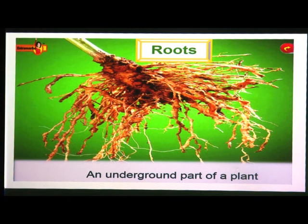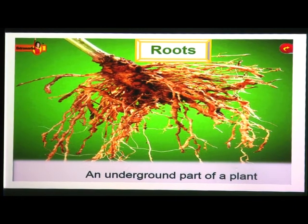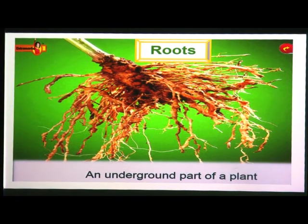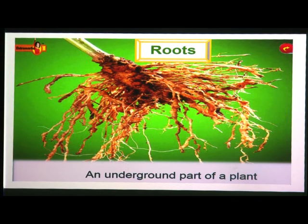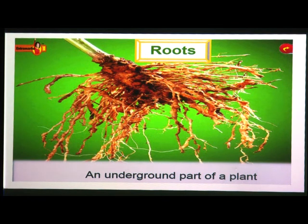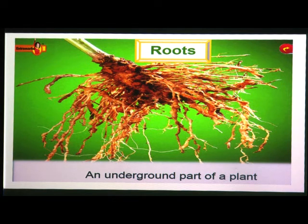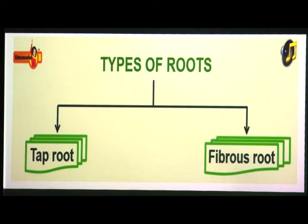The root and its branches make up the root system of a plant. Root is the underground, non-green part of the plant. It grows in the soil and away from light. There are mainly two types of roots: tap root and fibrous root.